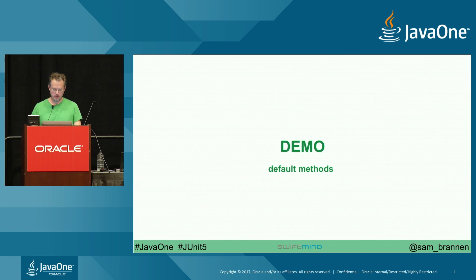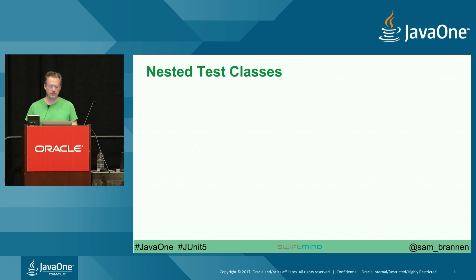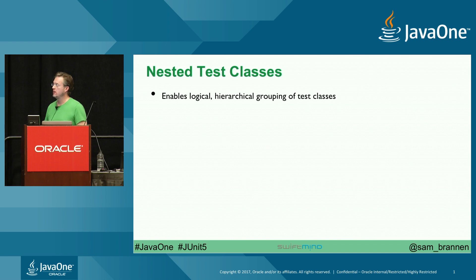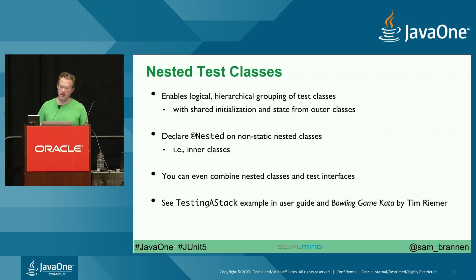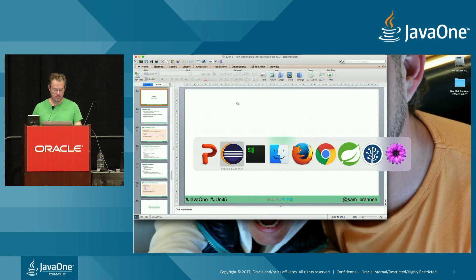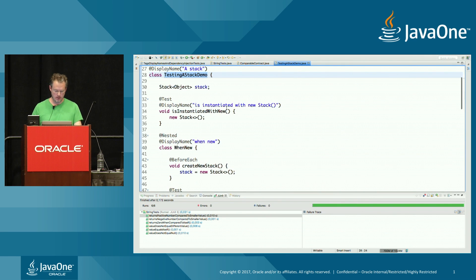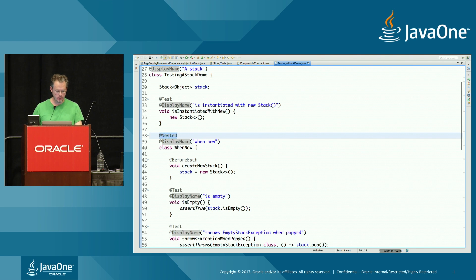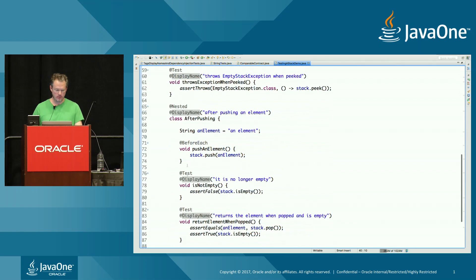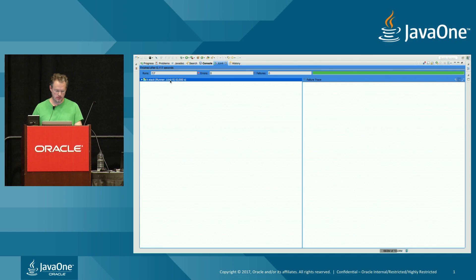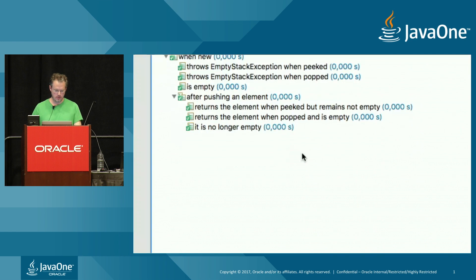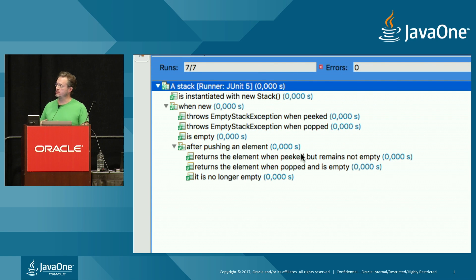Nested test classes enable logical hierarchical grouping of test classes with shared initialization state from outer instances. You declare @Nested on a non-static nested class (inner class). You can combine nested classes and test interfaces. The testing stack example in the user guide shows how — using @DisplayName with nested classes creates a BDD-style hierarchy in the test view, with various levels and custom names. It's a cool new feature.